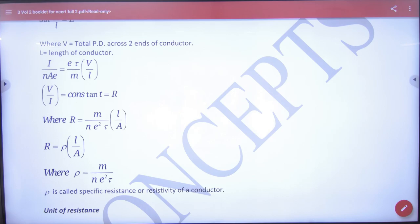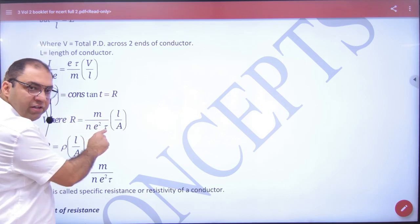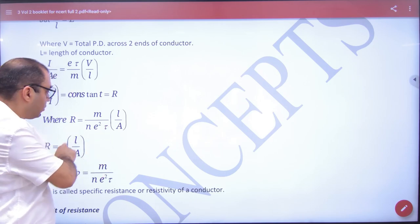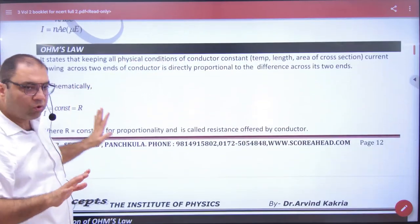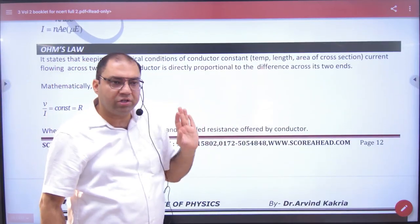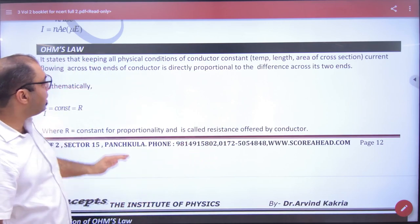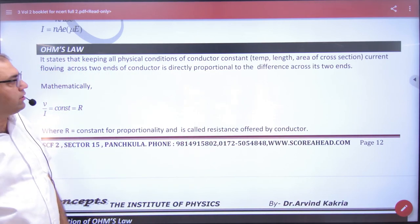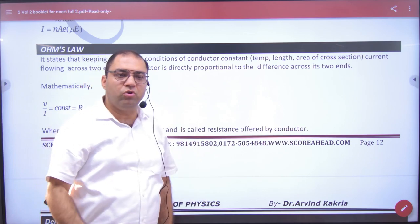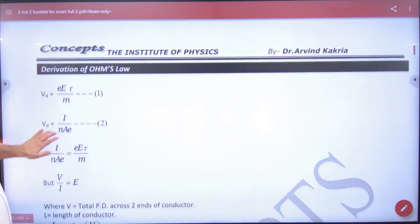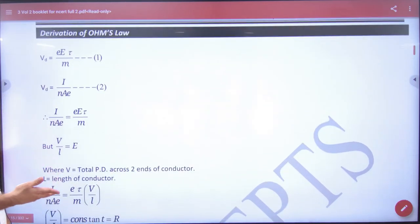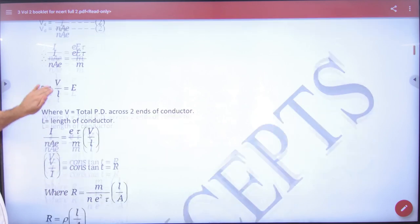If the resistance will increase, this is why we say when temperature increases, average relaxation time will decrease, resistance will increase. But Ohm law says resistance value constant, physical condition constant. Any change: current flowing across two ends of the conductor is directly proportional to potential difference across it. Clear? Here now we have done derivation.